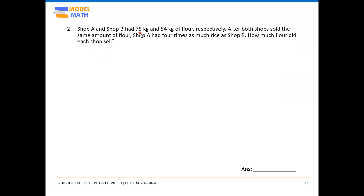Shop A and Shop B had 75 kg and 54 kg of flour respectively. After both shops sold the same amount of flour, Shop A had four times as much flour as Shop B. How much flour did each shop sell? Note: there is a typo in the original — it should be flour, not rice.